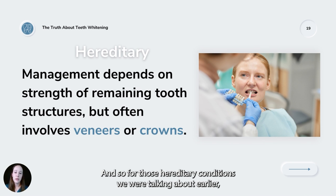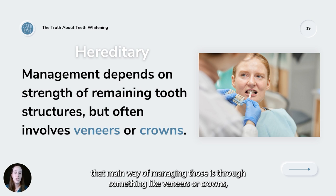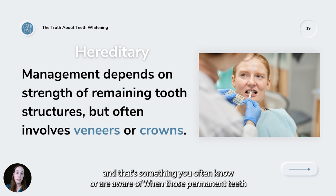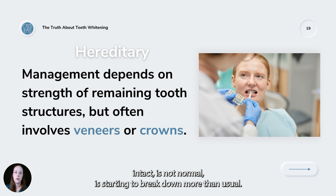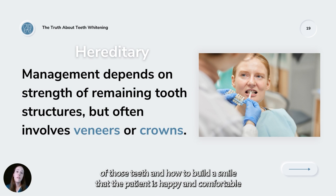For hereditary conditions like amelogenesis imperfecta, the main management is through veneers or crowns, often managed by a prosthodontist who has extra training for complex bite issues and treating multiple teeth at once. You often become aware right when permanent teeth start coming in that the enamel is not intact and is starting to break down. You can start planning for a lifelong cosmetic management of those teeth to build a smile the patient is happy and comfortable with.